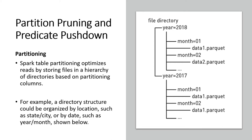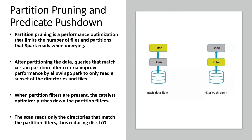For example, we have data partitioned based on year. There is a top-level directory for year 2018 and another for 2017, and all the data files — like Parquet files — belonging to a particular year fall under the corresponding directory. This partitioning optimizes how you scan or read data while performing your queries or using Spark APIs.